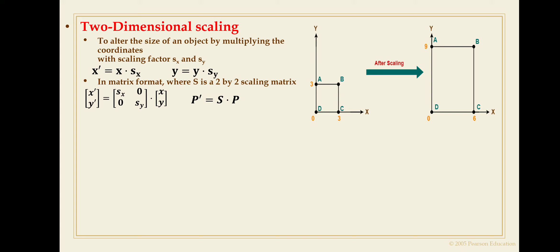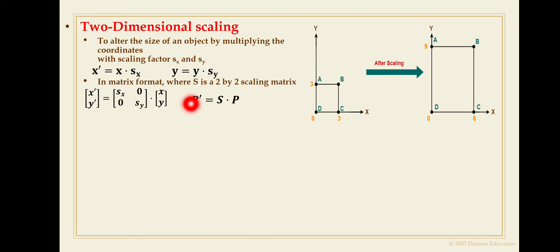In uniform scaling, sx is equal to sy. If sx is not equal to sy, the scaling is known as differential scaling. By using differential scaling, a circle can be converted to an ellipse and vice versa. To summarize, the general formula for scaling is P' = S · P, where S is the scaling matrix [sx, 0; 0, sy] and P is the original position of the point.